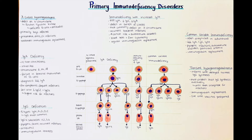Let's start with X-linked agammaglobulinemia. Since this one was one of the first described primary immunodeficiencies, we'll start with this one. It is also referred to as Bruton's disease since it was discovered in 1952 by Ogden Bruton. X-linked agammaglobulinemia is a primary immunodeficiency that is due to a gene mutation on the X chromosome.